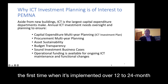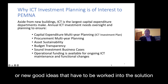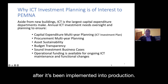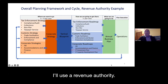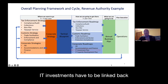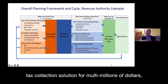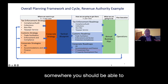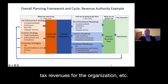No IT project gets it right the first time. Over its 12 to 24 month development window, there are always things that were missed, things that weren't quite gotten correctly in the specification, or new good ideas that have to be worked into the solution after it's been implemented into production. In the presentation I use a revenue authority as an example — I have 35 years of experience working in that space — but you could substitute any other government ministry. IT investments have to be linked back to the business strategies of the organization. If you're going to invest in a large new tax collection solution for multi-millions of dollars, somewhere you should find a business strategy from collections that explains the value of this and how it's going to improve tax revenues.